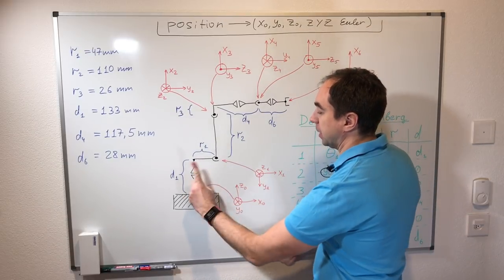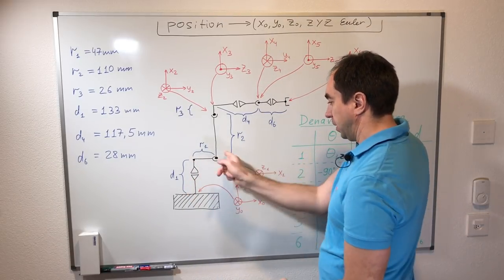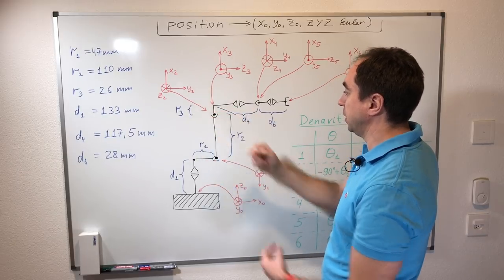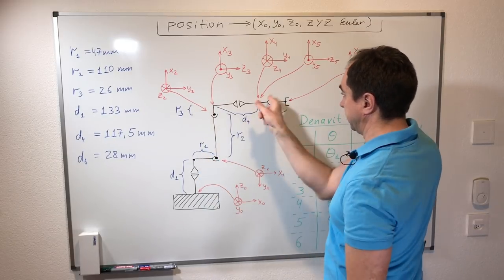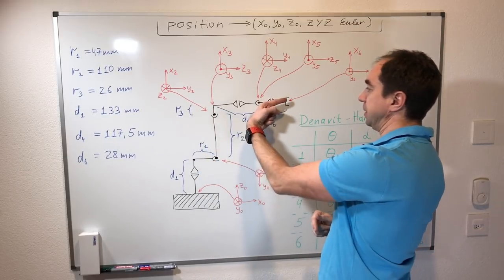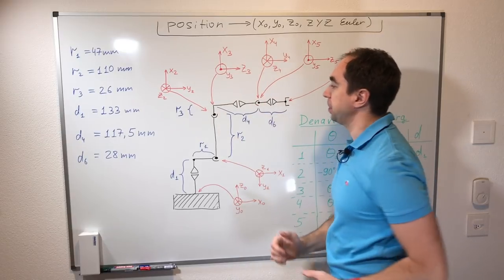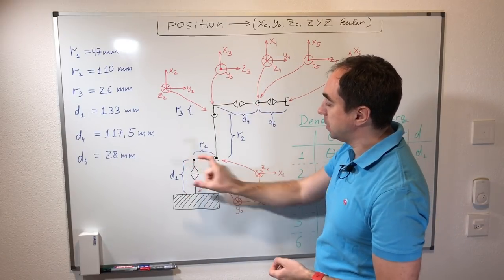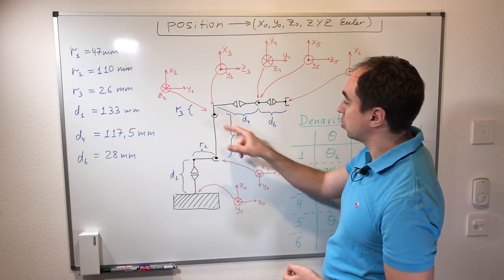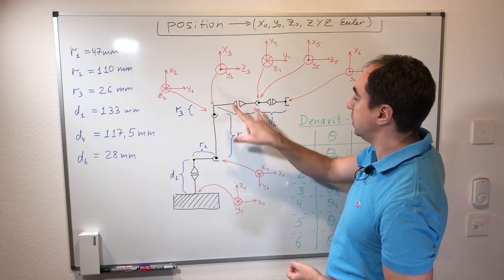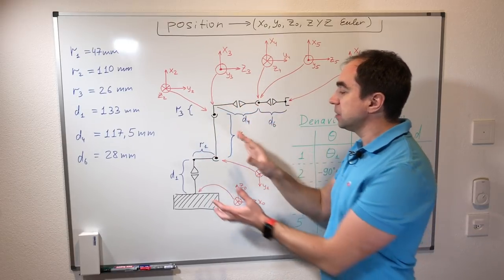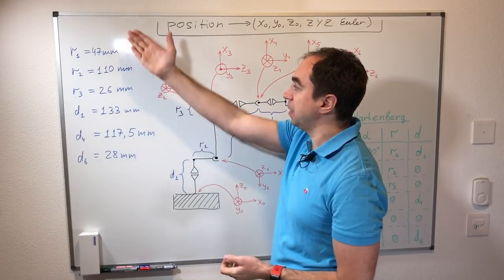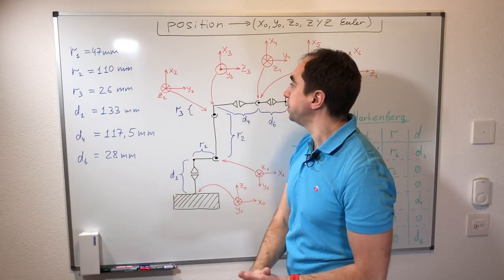So this one rotates like this, the second joint rotates like this, the third like this, fourth like this, fifth like this, and sixth like this. I also indicated here D1, R1, R2, R3, D4, D6. These are the dimensions of this robot, and all these dimensions are shown here.